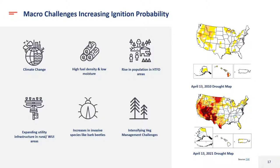Dave added: some of these factors are really outside the utilities' control. We can do a lot of things, but it may not be possible to actually reduce the overall risk because of these macro trends. It's definitely a tough business.